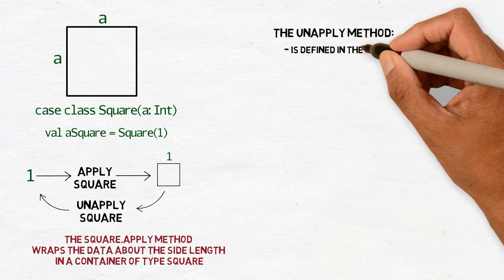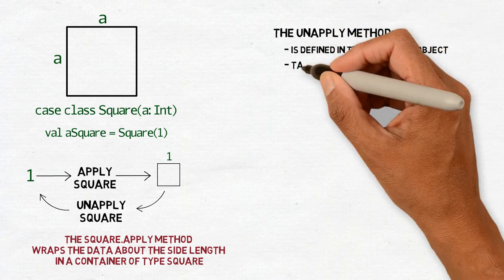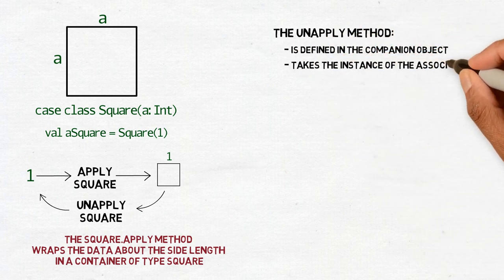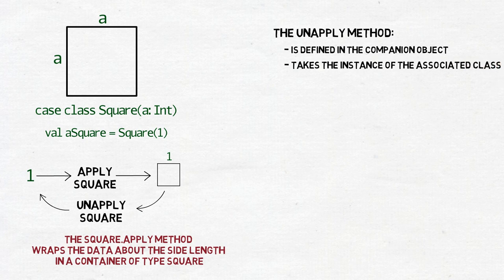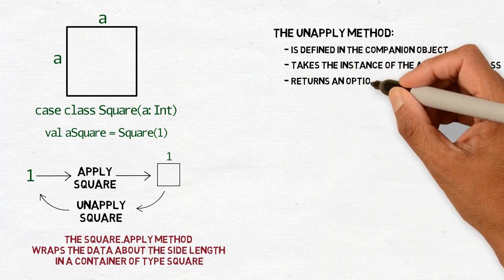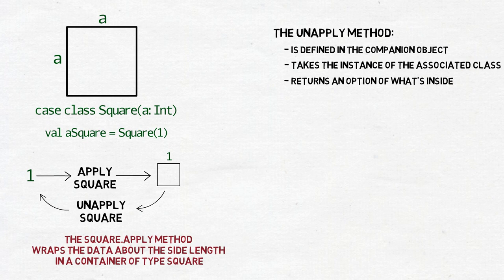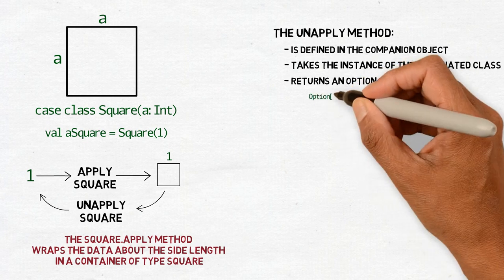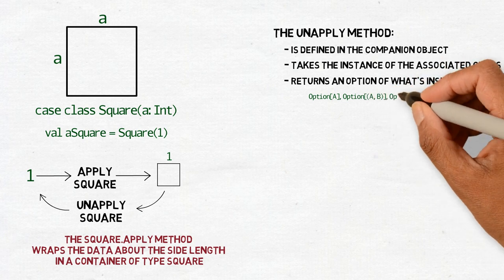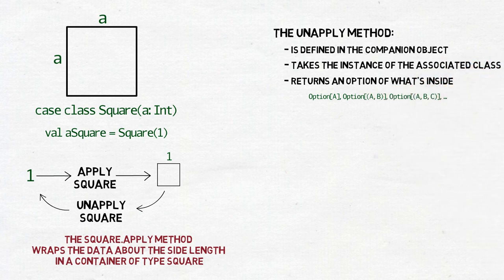It is defined in the companion object, usually takes the instance of the associated class as its only argument, and returns an option of what's inside the instance. In the simplest case, this will be just fields of the class. One if there is only one field in the class, and otherwise a pair, a triple, a quadruple, and so on.